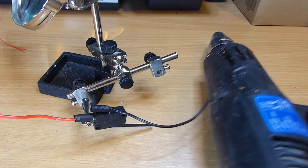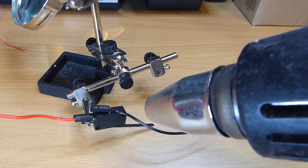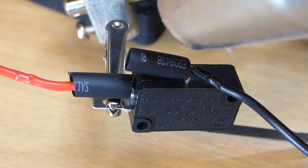Take a heat gun, lighter or other heat source and heat up the heat shrink in order to conform and stick it to the connection.